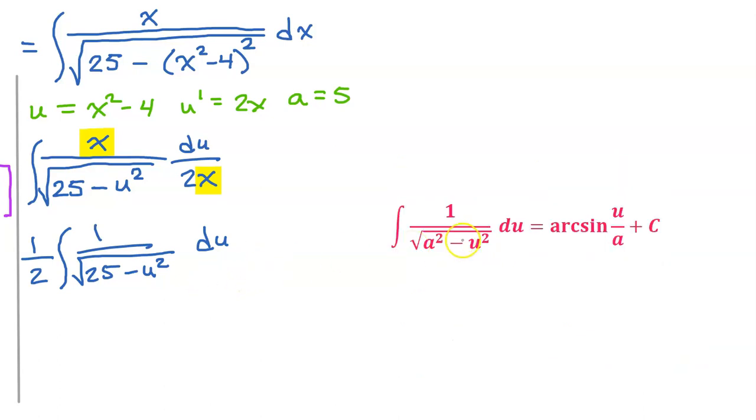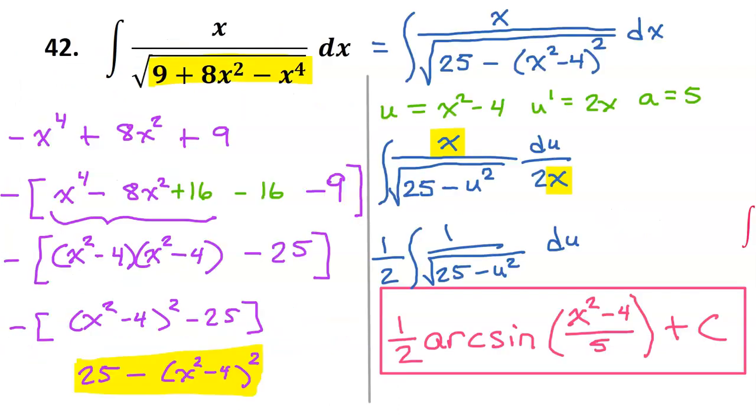We can now use this rule to integrate. So I see arcsine u over a. So I'm going to write arcsine u over a. u is x squared minus 4. And a is 5. So this is arcsine u over a plus c. Don't forget that we have this 1 half in front of the integral. So I do need to bring that down. So this is the final answer for number 42.